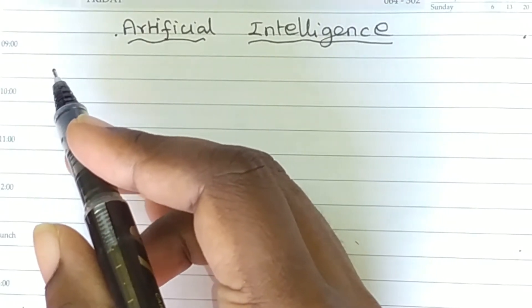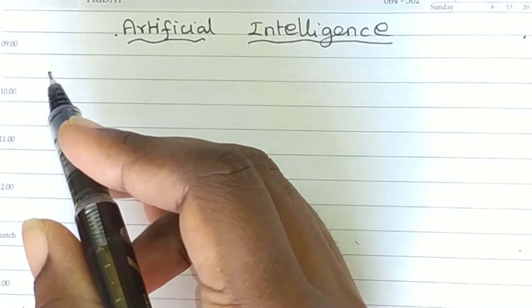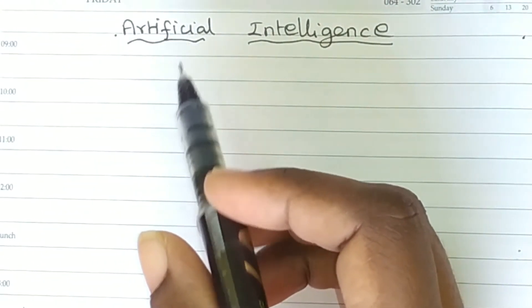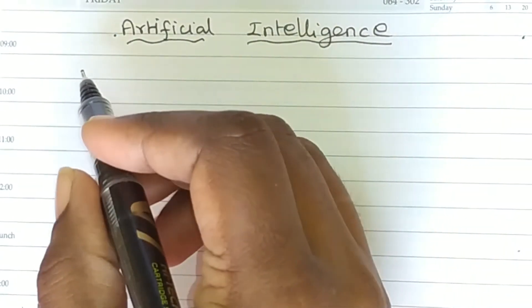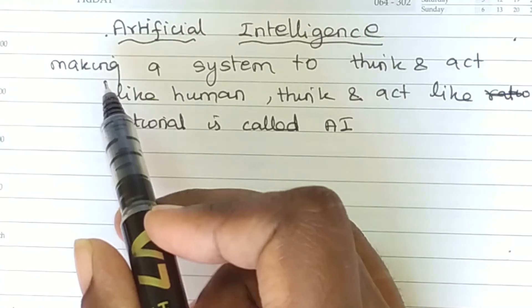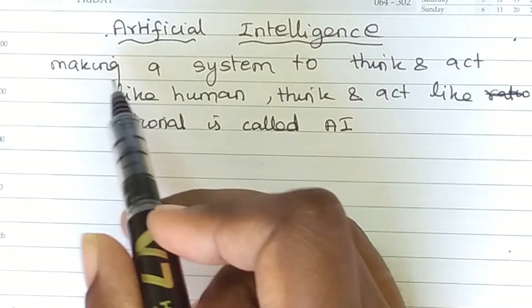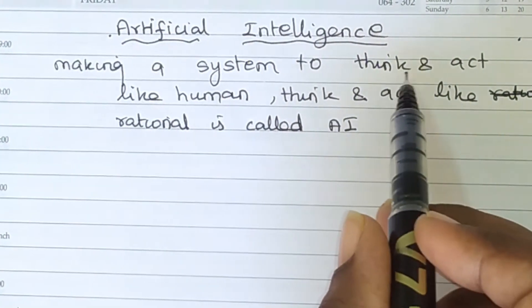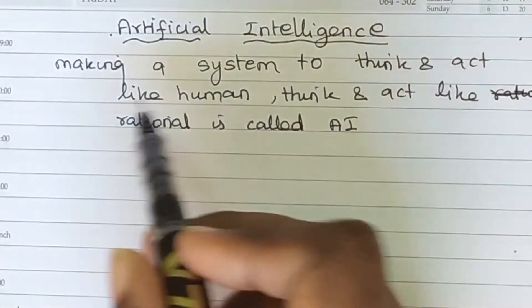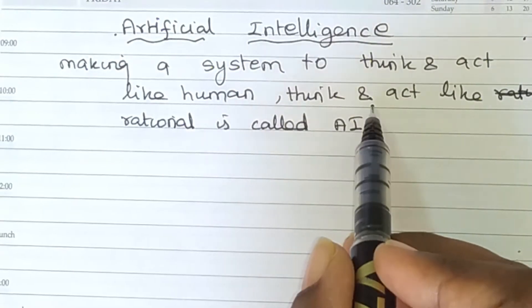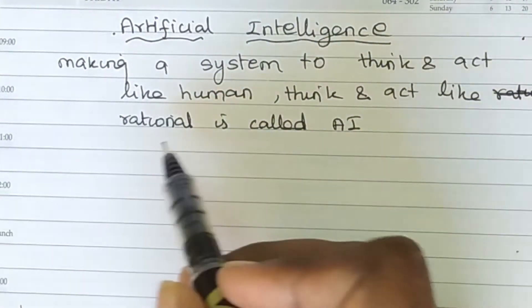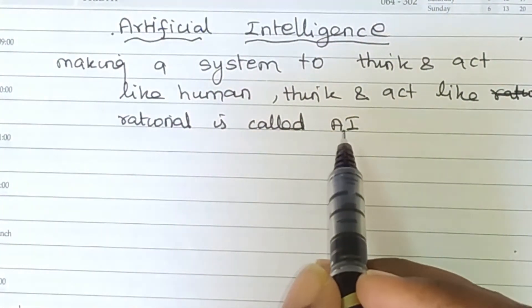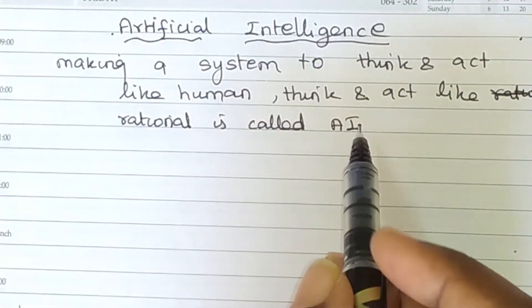In this tutorial we are going to learn about artificial intelligence. Artificial intelligence means making a system to think and act like a human — think and act rationally — and that is called artificial intelligence.